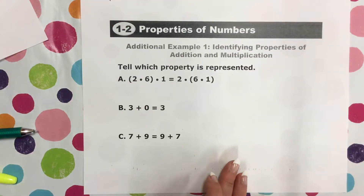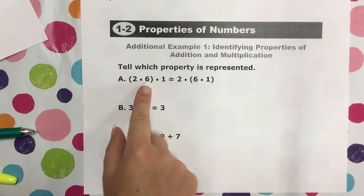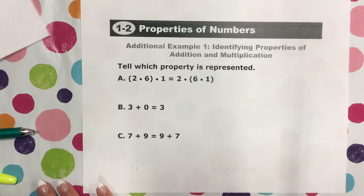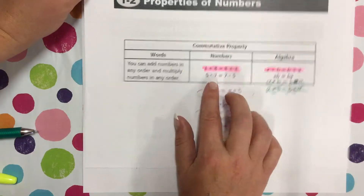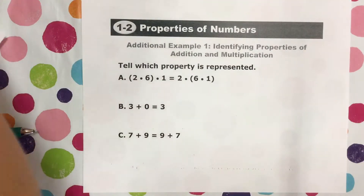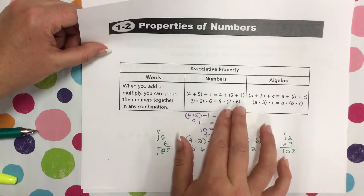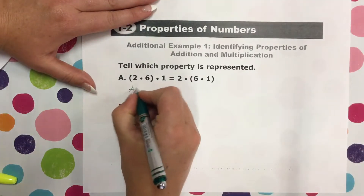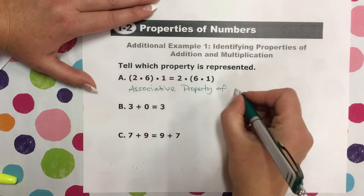All right, on to some problems. In Example 1 we're identifying properties of addition and multiplication — we just need to tell which property is represented. For part A: 2 times (6 times 1) equals (2 times 6) times 1. Does it look like the commutative property? We're dealing with multiplication, but we're not just swapping the order — there are parentheses involved. This looks exactly like the associative property, because the parentheses are on different sides. This is the associative property of multiplication.